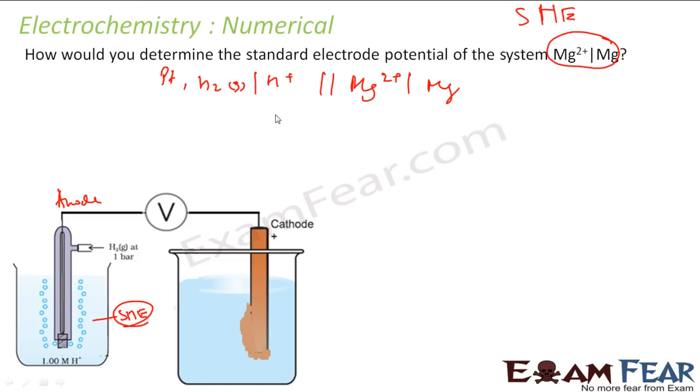Correct. And why this is cathode? Because you need to find the electrode potential that is nothing but reduction potential. So since here reduction will happen, you get an exact value. So now in this case, E cell will be what? E right minus E left. That is nothing but E right is this, this is Mg and this is Mg+ solution here.